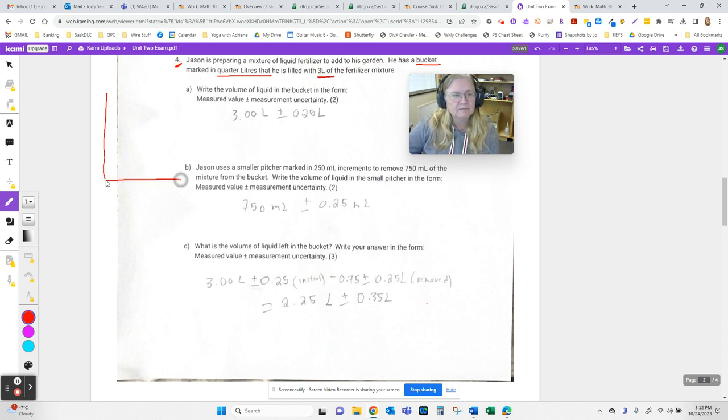So we know we have a pail. This will be a really ugly pail but here's a pail and it's marked in quarters. And so on. I don't know how far up it goes but there it is.